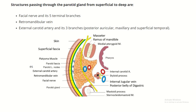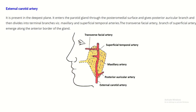Structures passing through the parotid gland from superficial to deep: the facial nerve, the retromandibular vein, and the external carotid artery. Arteries within the gland include the transverse facial artery, the maxillary artery, and the posterior auricular artery — all branches of the external carotid artery present within the parotid gland.